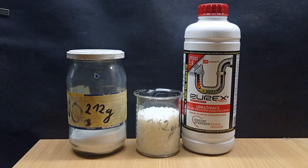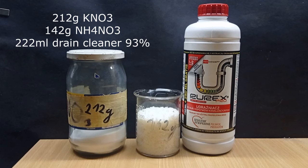I used stoichiometric proportions. I've prepared 212 grams of potassium nitrate, which I bought as salt to cure meat, 142 grams of ammonium nitrate that was recrystallized from common fertilizer, and 222 milliliters of 93% sulfuric acid drain cleaner that I just bought online.